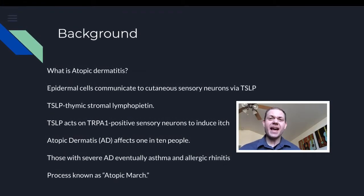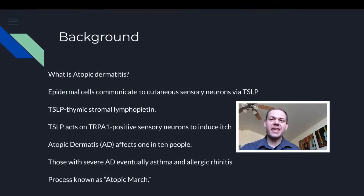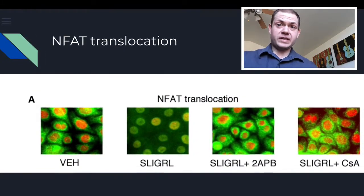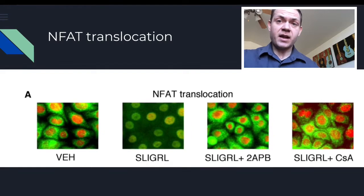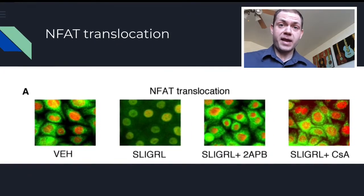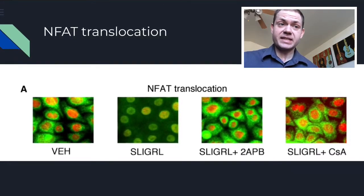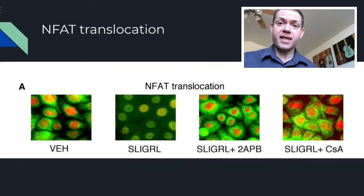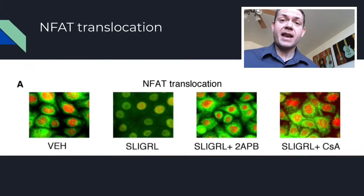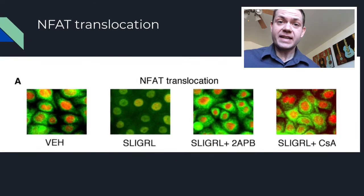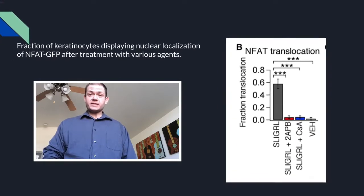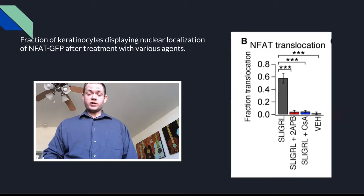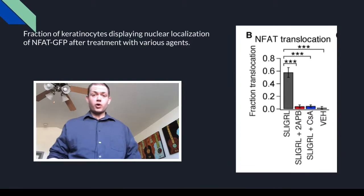How come they always have pandemics for horrible things? What you see here is nuclear localization of keratinocytes when they're treated and incubated with various substances for 30 minutes. The green shown is NFAT and the red is DAPI. This figure shows the NFAT green fluorescent protein localization in the nucleus and translocalization.